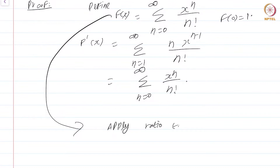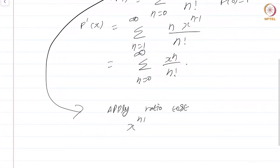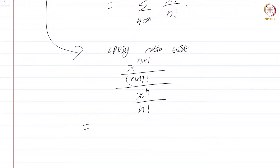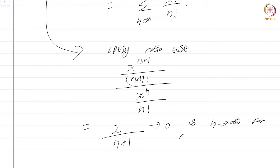Applying the ratio test, you get x^(n+1)/(n+1)! divided by xⁿ/n!. The n! cancels, giving x/(n+1), which converges to 0 as n approaches infinity for any fixed x. Therefore, for each x the ratio test tells you it is convergent, so the power series converges at every point of the real numbers — the radius of convergence is infinity. So we have shown existence.